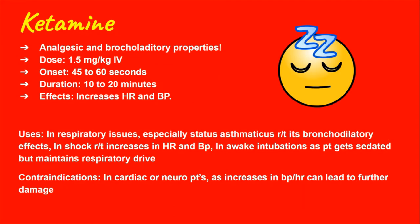Now let's talk about ketamine. It's very useful in respiratory issues — it does have bronchodilatory properties — and it's useful in shock because it increases the heart rate and blood pressure. Another good thing about ketamine is that it does have analgesic properties. However, because it can increase the blood pressure and heart rate, it's not used for cardiac or neuro patients since that can be damaging. The typical dose is 1.5 mg/kg with an onset of approximately 60 seconds and a duration of up to 20 minutes.